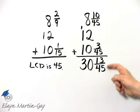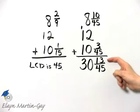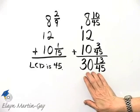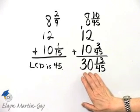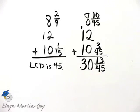We need to check the 13 over 45. It is in simplest form, and it's not an improper fraction. So this form of the answer is fine. 30 and 13 over 45.